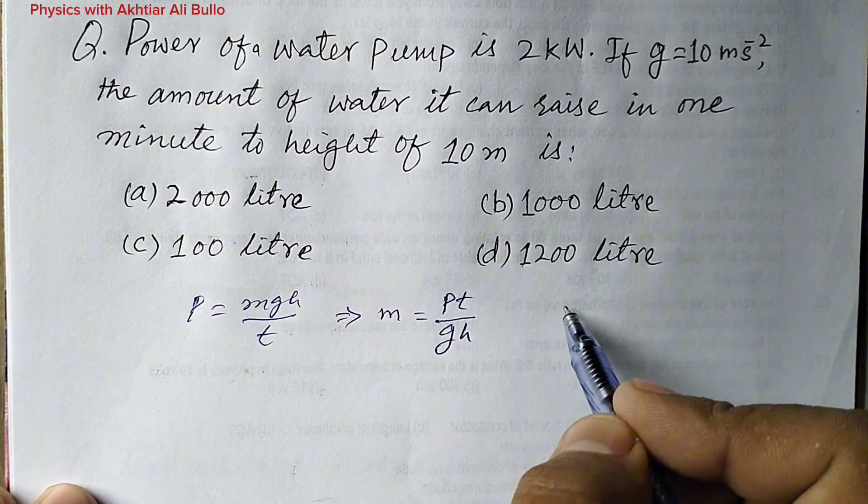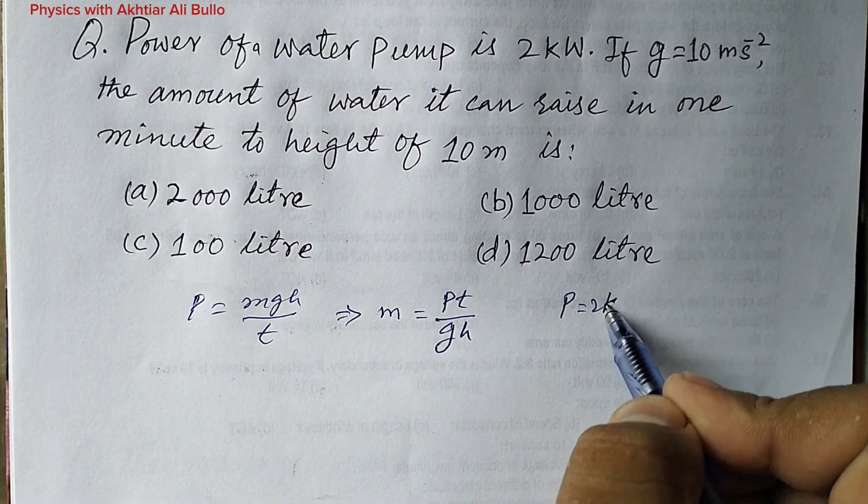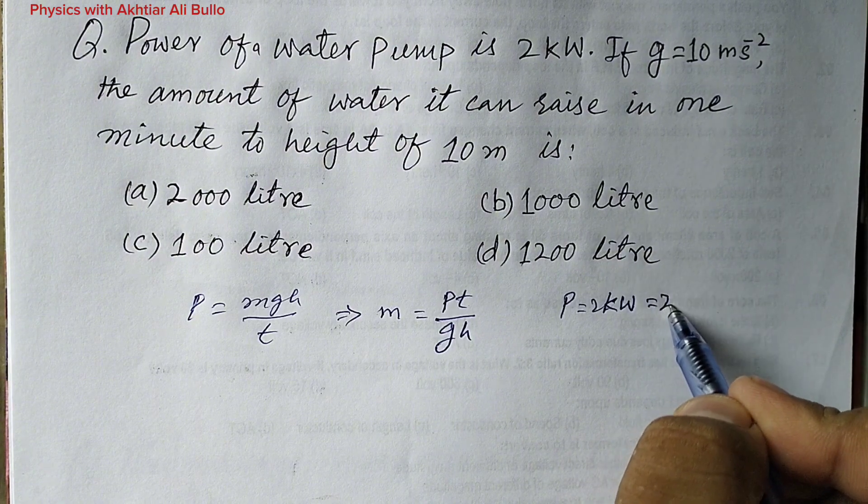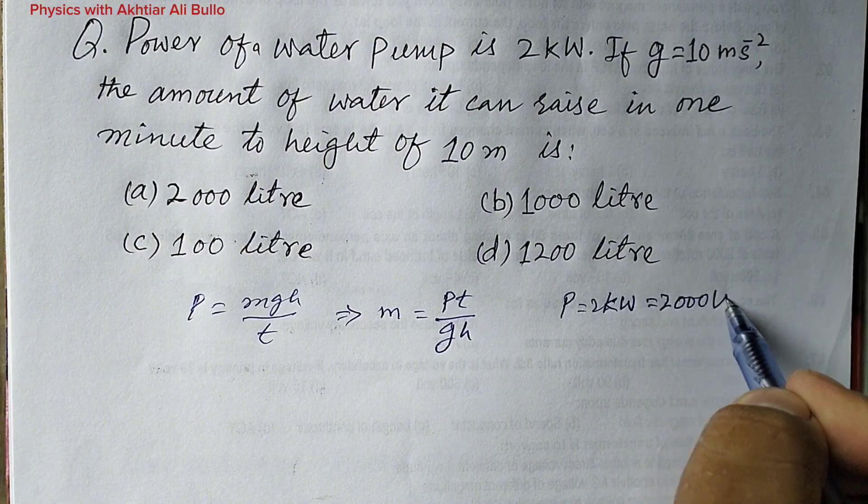The power obtained is 2 kilowatts, which is equal to 2,000 watts.